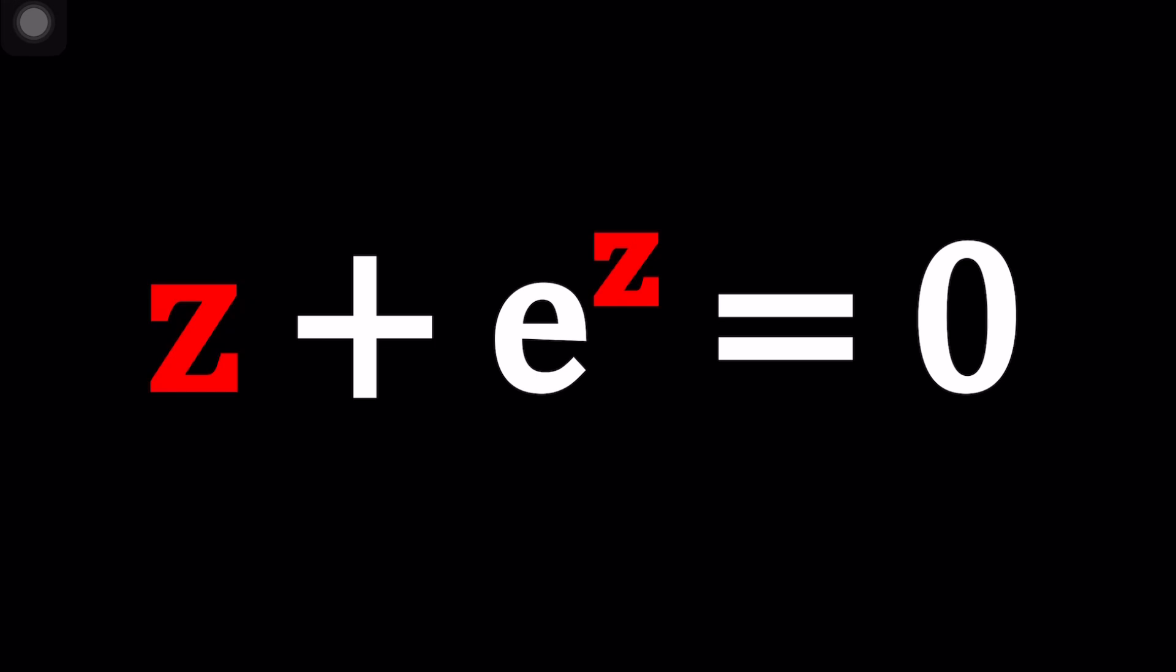This equation could be considered non-standard because we have a mixture of a linear function and an exponential function and they're being added to get zero. Is this possible at all? We have z and e to the power z and their sum is zero. So we're going to look for the z value that satisfies this equation. Let's see how we can do it.